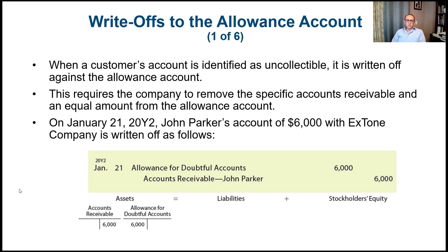Hello everyone. Let's continue our discussion for chapter 8, which is about receivables. We started talking about the write-offs of bad debts. Now we'll see how the write-offs for bad debts would be recorded using journal entries applying the allowance method, and then we'll see different approaches or methods that can be used to write off bad debts.